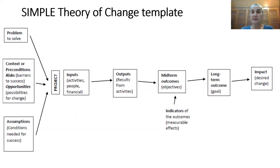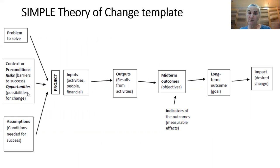So here's a simple theory of change template. You can see on the left the problem to be solved, the preconditions or context which exist as risks or barriers to success or opportunities for change, and the assumptions that you need to lay out — the conditions needed for success to occur.